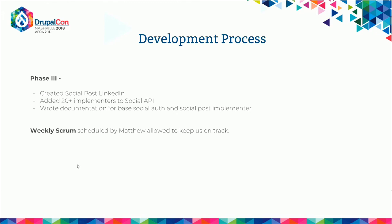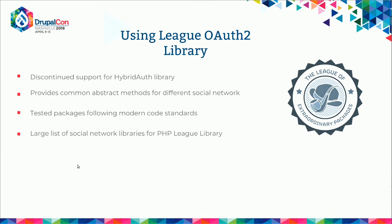In phase three, I created Social Post LinkedIn — so as Valentin showed you the demo of Social Post Twitter, you could do the same with Social Post LinkedIn. I added more implementers — all the images you saw earlier were created by me. I wrote the documentation for Social Auth-based implementers and Social Post implementers, so if anyone wants to create their own implementers, they can follow the code and create one. One thing that really helped us during the development process was Scrum, implemented by Matthew. Every student says 'I don't want to do this daily check-in,' but now that we're done with it, it gave us real-life experience and helped us stay on track.